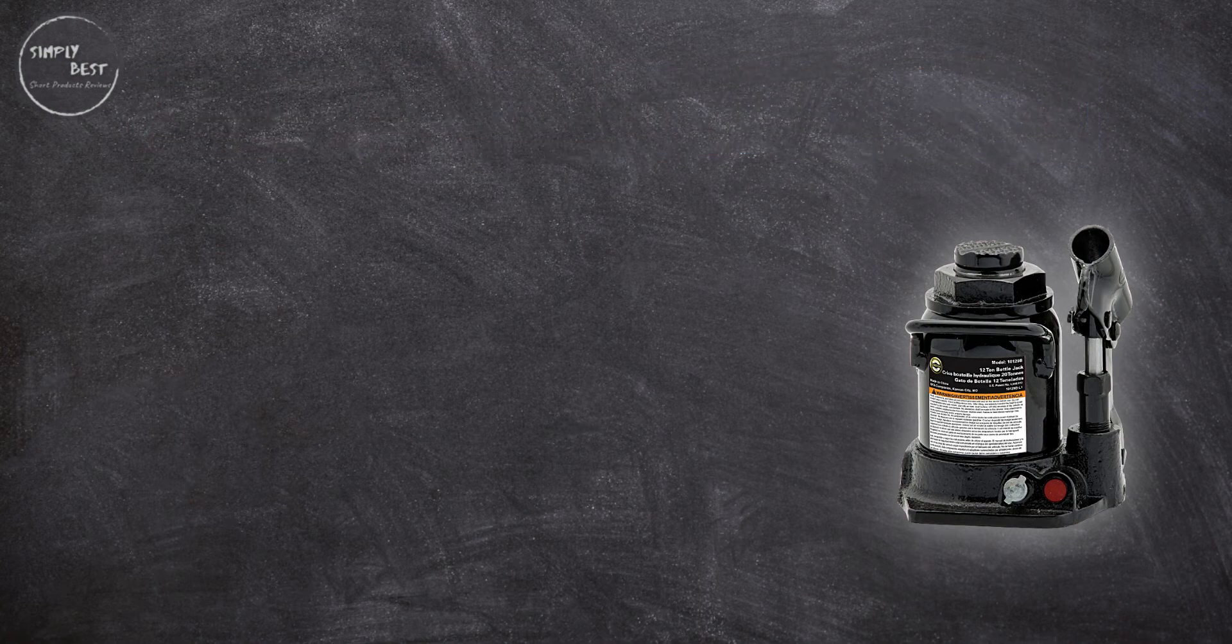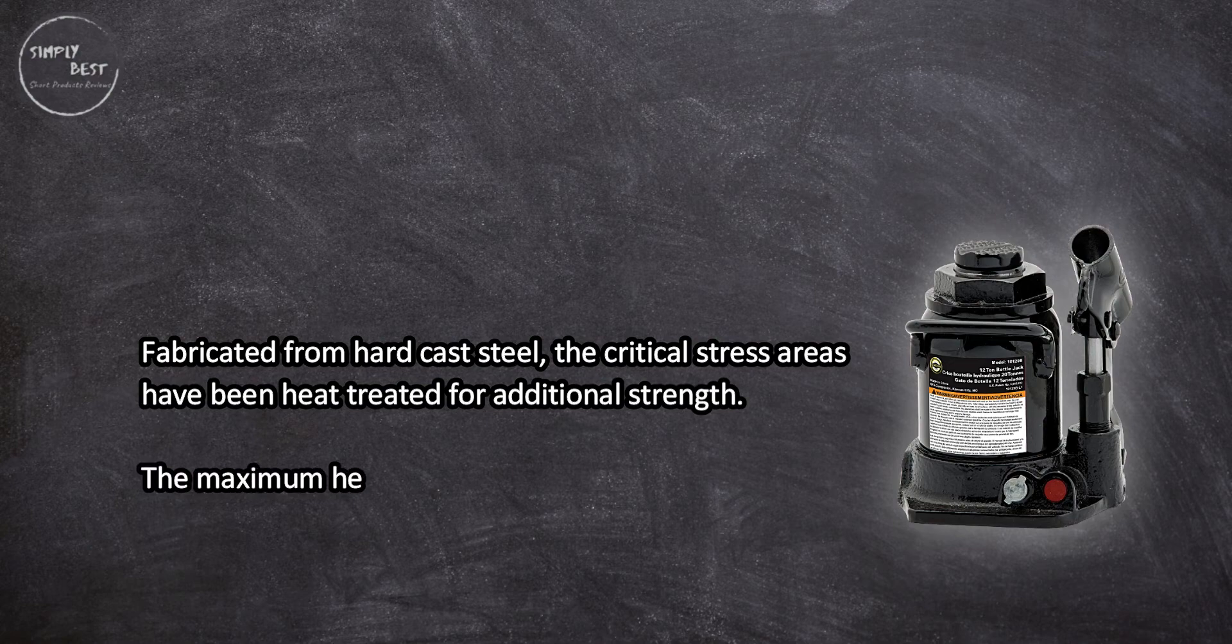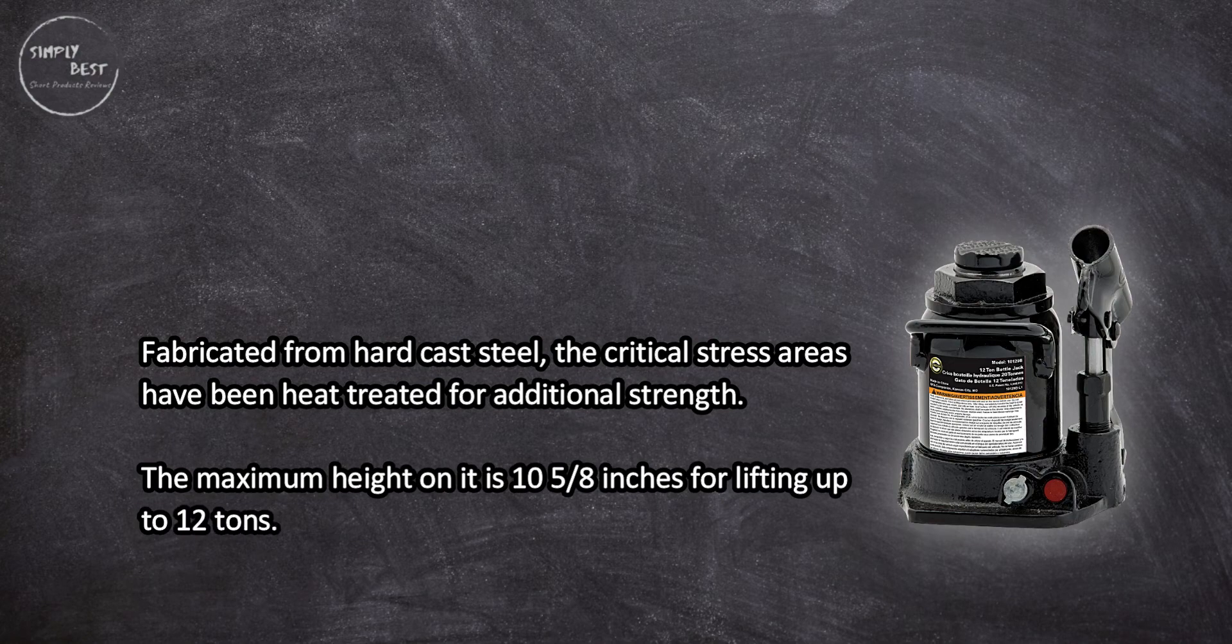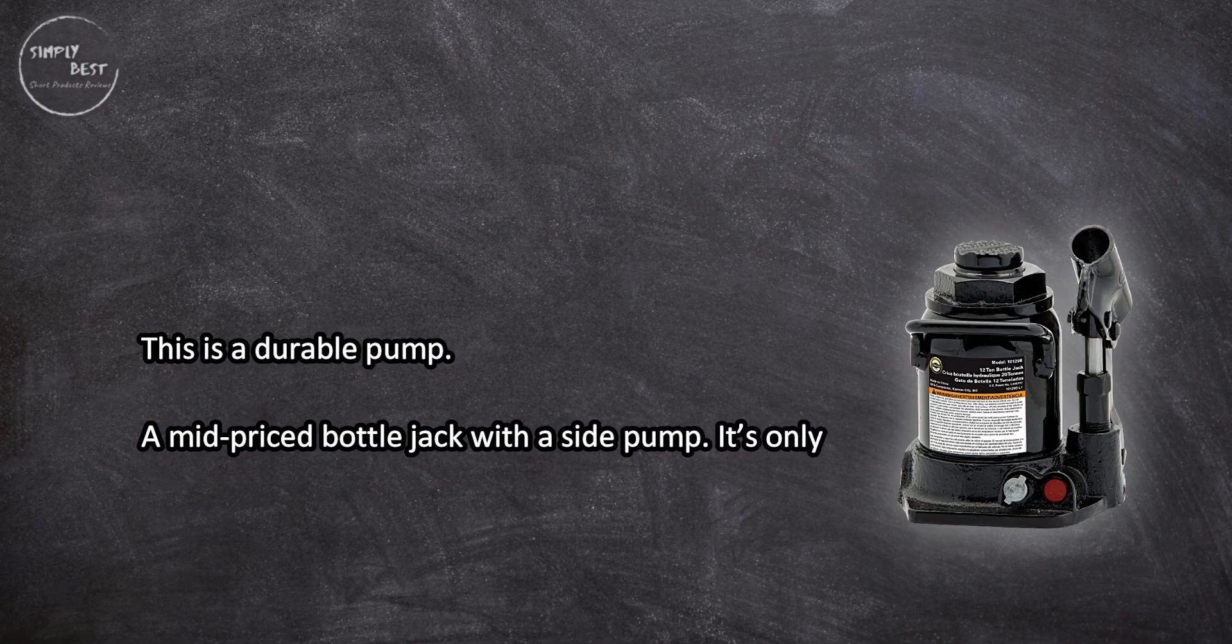Fabricated from hard cast steel, the critical stress areas have been heat-treated for additional strength. The maximum height on it is 10 and 5/8 inches for lifting up to 12 tons. This is a durable pump, a mid-priced bottle jack with a side pump. It's only 6.125 inches high, so it fits under most any vehicle.